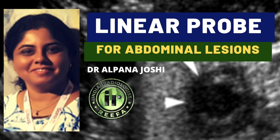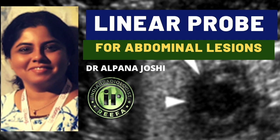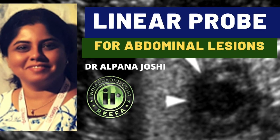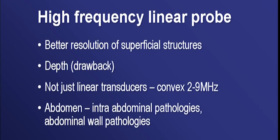We all know the advantages of high-frequency transducers — better resolution of superficial structures — but the drawback is depth penetration. Nowadays it is not just linear transducers; many companies are coming up with high-frequency convex transducers, 2 to 9 MHz. By and large we still use linear transducers, 5 to 12 MHz or 4 to 9 MHz, to better visualize abdominal structures.